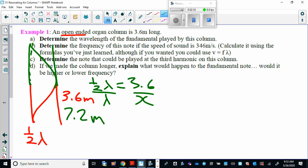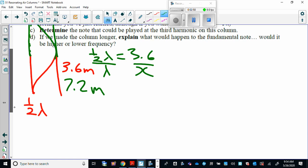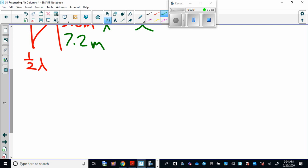B says determine the frequency of this note if the speed of sound is 346 meters per second. On average, we consider the speed of sound to be around 330, 340 meters per second. It changes according to air temperature. So the warmer it is, the faster sound travels, not by huge amounts, but if you spend your life in the Arctic, then yeah, you will have to get used to sound traveling at 326 meters per second.